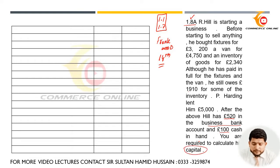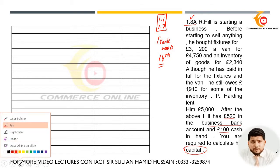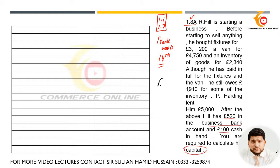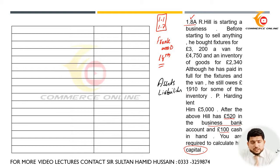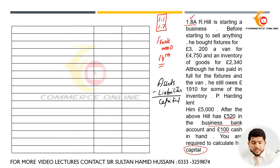What you need to do is find out the capital. As I have told you earlier, if you want to calculate capital, you first need to calculate assets, and then you have to subtract liabilities from assets. In the end, you will get the amount of capital. Here I will follow the balance sheet approach, so first you need to write R Hill and then Balance Sheet.